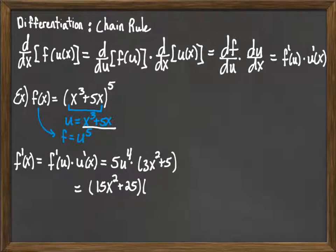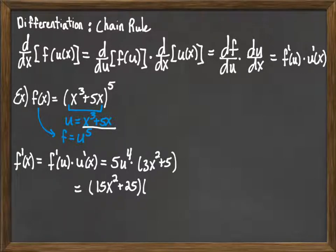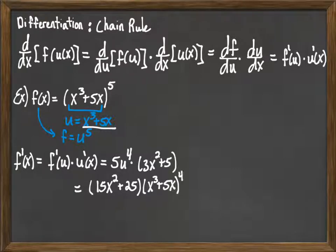At this point I have u to the fourth, but I want to write my answer as f prime of x. So I go ahead and replace u with x cubed plus 5x, and that's raised to the fourth power — giving the final answer (15x squared plus 25) times (x cubed plus 5x) to the fourth.